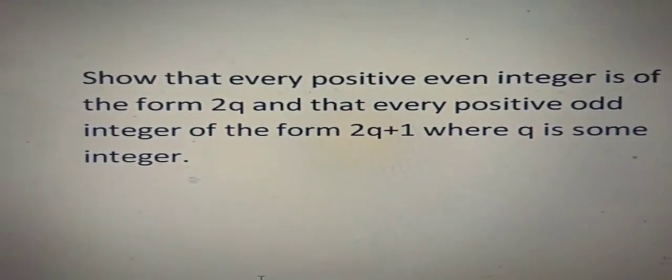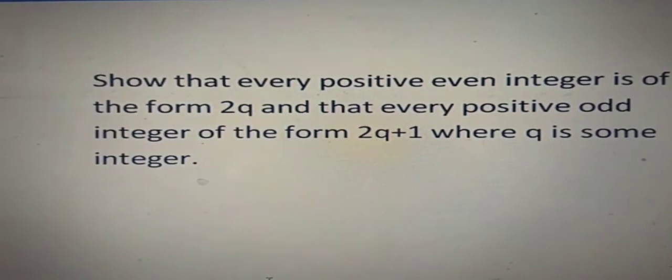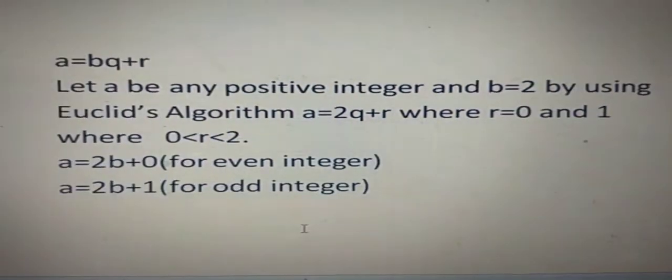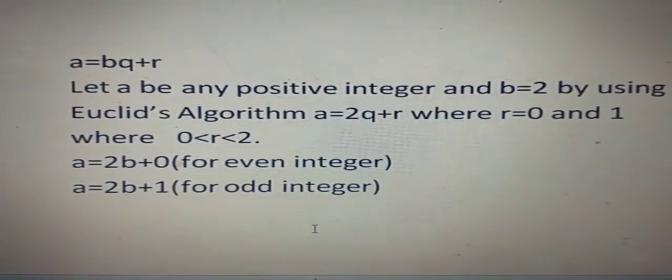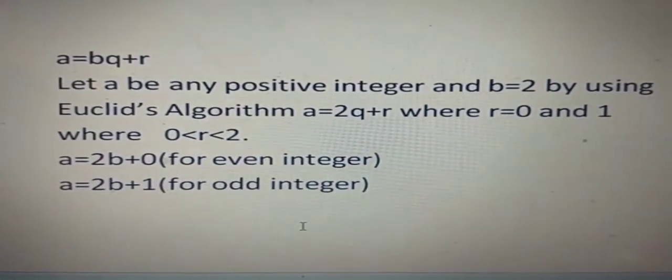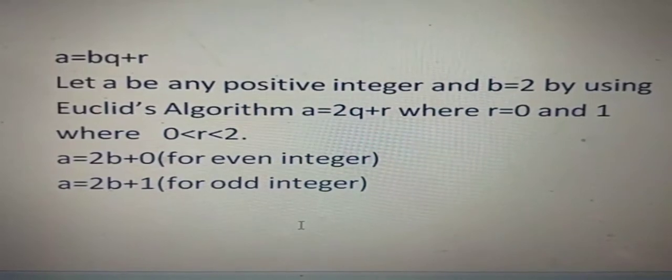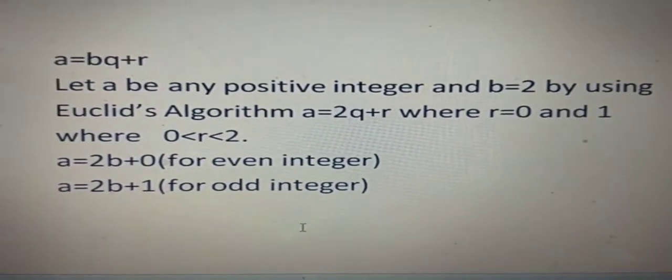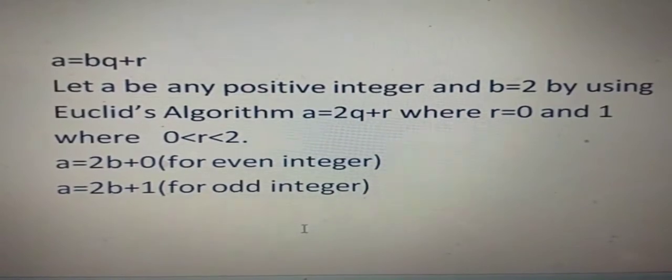Now I will show you one more example. Show that every positive even integer is of the form 2q and that every positive odd integer is of the form 2q plus 1, where q is some integer. Here is the solution of the given question. a equals bq plus r where r equals 0 and 1. Let a be any positive integer and b equals 2. By using Euclid's algorithm, a equals 2q plus r where r equals 0 and 1, where r is greater than 0 but less than 2. If we put the value of r, a equals 2b plus 0, it is for even integer. If we put r equals 1, a equals 2b plus 1, it is for odd integer.